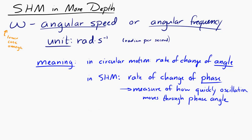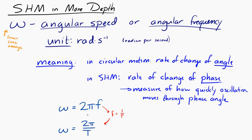Omega is proportional to the frequency. We can also write it in terms of the period: omega is inversely proportional to the period. That equation will show up in your data booklet.